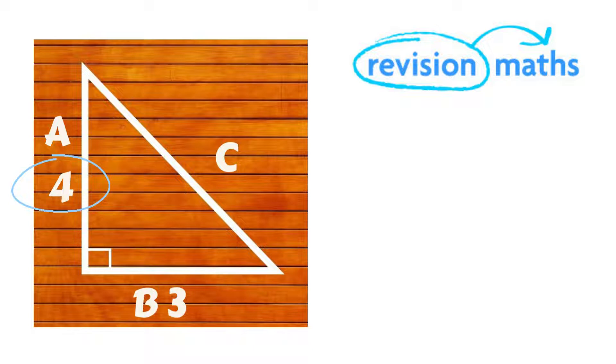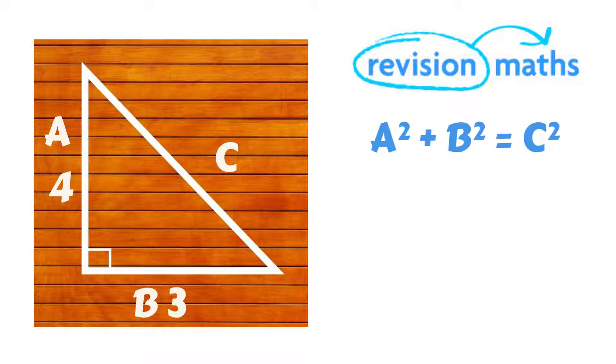In the example on the screen we know that side A is 4cm long and side B is 3cm long. So we have to calculate the length of side C. The equation for Pythagoras Theorem that you will need to remember is A² + B² = C².